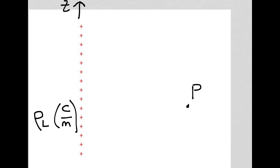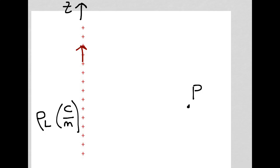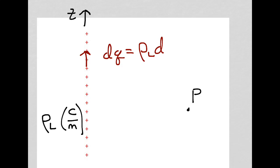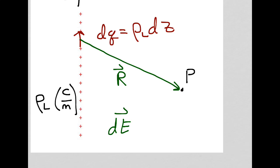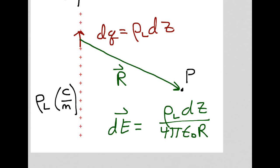If we take a differential length dz, the amount of charge in that differential length is dq, given by rho sub L times dz. Let uppercase R represent the vector that points from dq to point P. The electric field intensity at P due to charge dq, which we call dE, equals rho sub L dz over 4 pi epsilon sub 0 r squared, where r is the magnitude of vector R, and a sub r is a unit vector pointing in the direction of R.